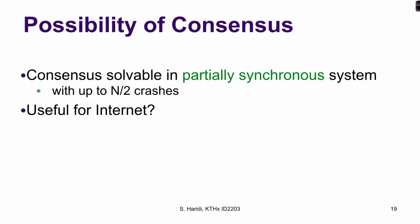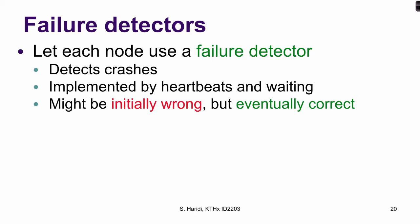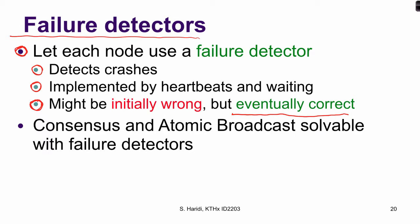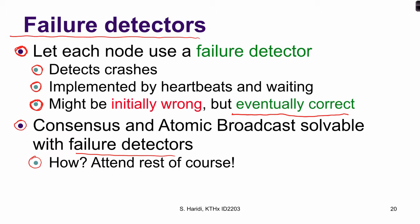Another approach is to talk about asynchronous systems augmented with what we call a failure detector. We let each process have a local device called a failure detector, which gives judgment about the crashes of other nodes. It is implemented by heartbeats and waiting for responses. It might be initially incorrect, but eventually it will be correct. Given an eventually perfect failure detector, consensus and atomic broadcast are solvable.